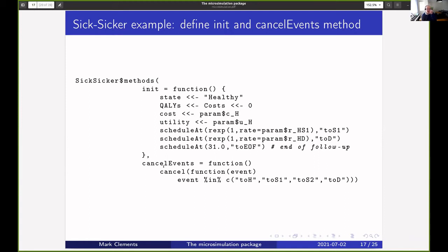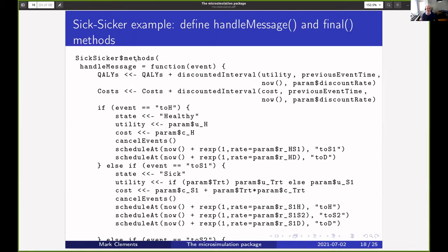I also define a short function which cancels out all of the transitions from healthy to sick and to sicker and to death, but it keeps the end of follow-up—that will not be removed. Then what we do in the handleMessage method is we do updating for the QALYs, updating for the costs, and then we just handle for each of the different types of events.